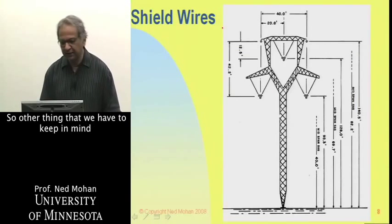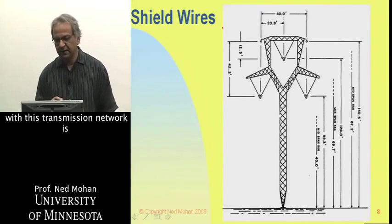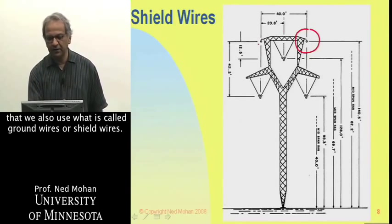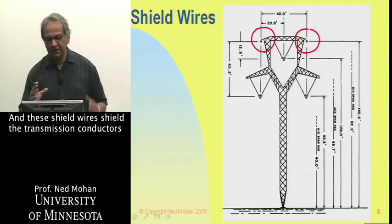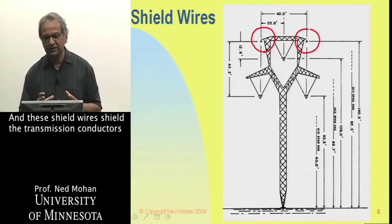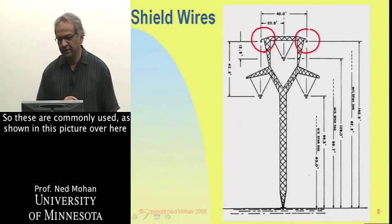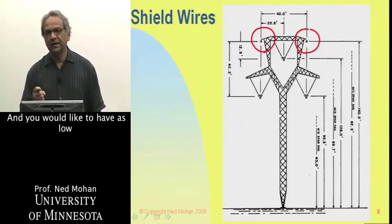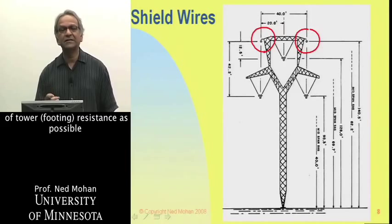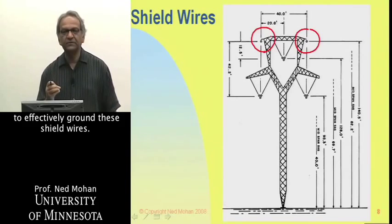Another important feature of transmission networks is the use of ground wires, also called shield wires. These shield wires protect the transmission conductors from lightning strikes, and they are commonly used as shown in these pictures. Every so many towers, these shield wires are grounded, and you want as low a tower footing resistance as possible to effectively ground them.